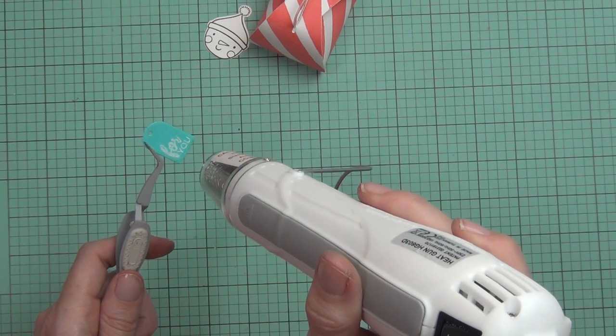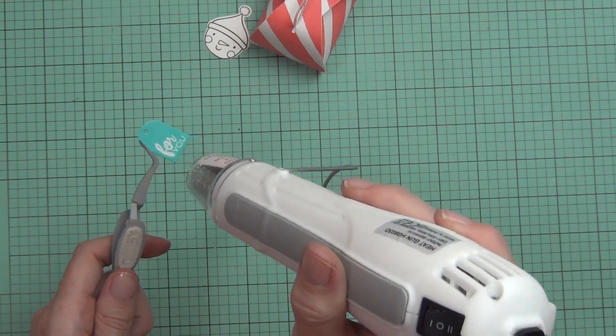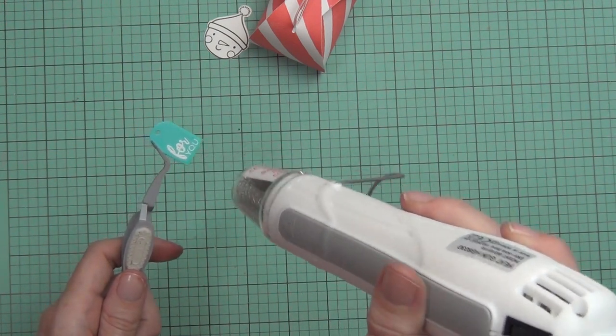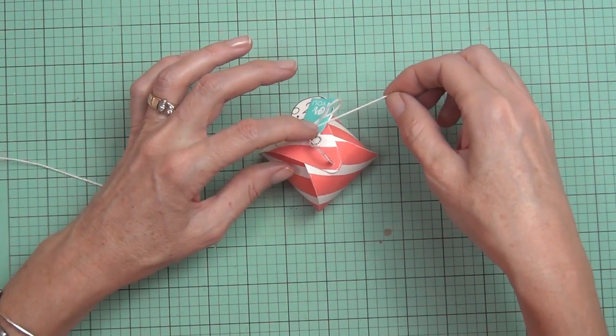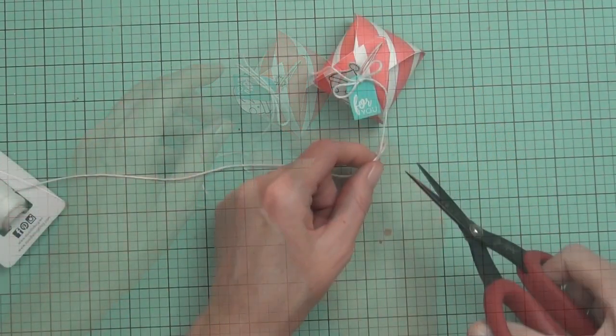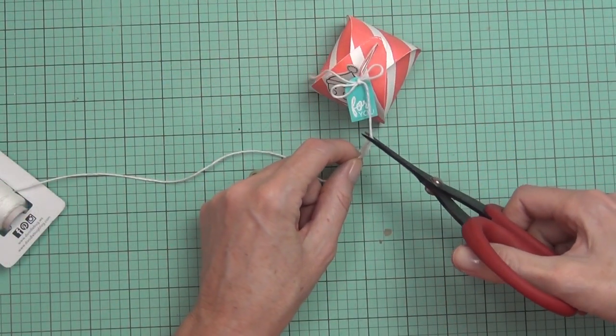I'm using the small sayings stamp set and white heat embossing. So I just use my tweezers to protect my fingers from the heat tool and added a white twine bow.